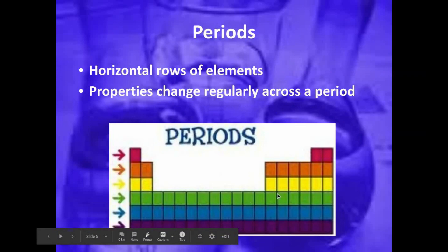Horizontal rows are called periods. When we look at the periodic table, there are seven periods that we will look at.